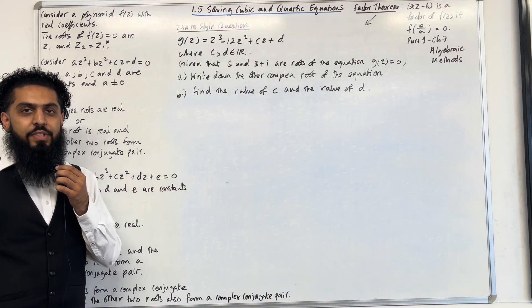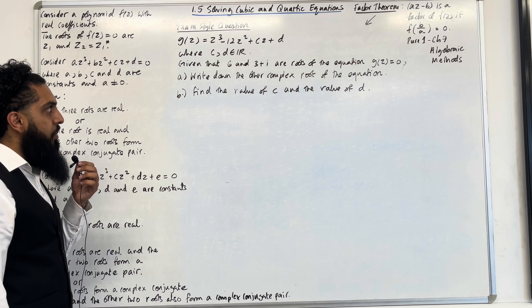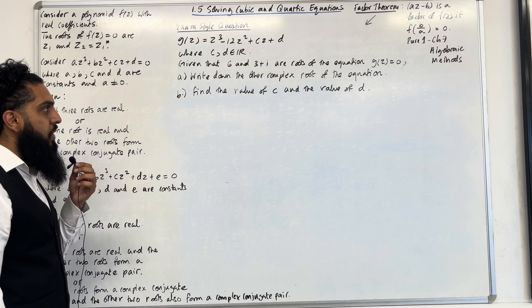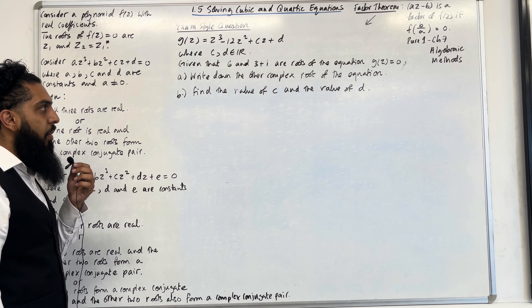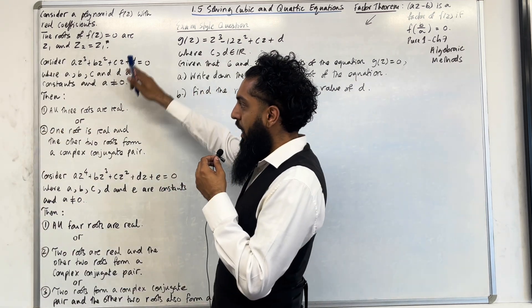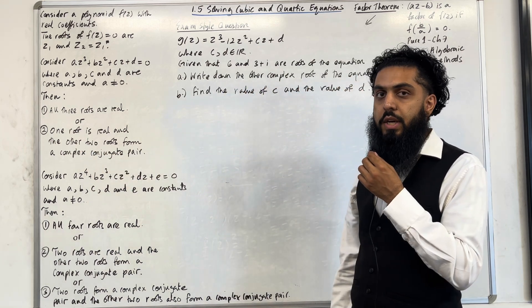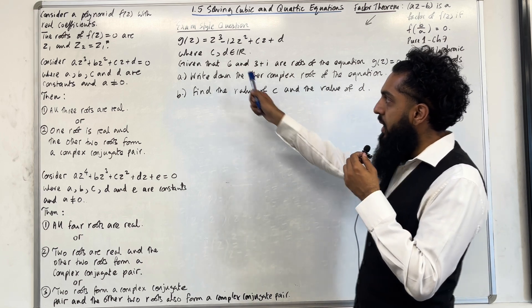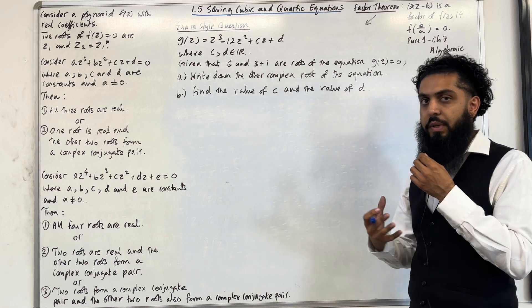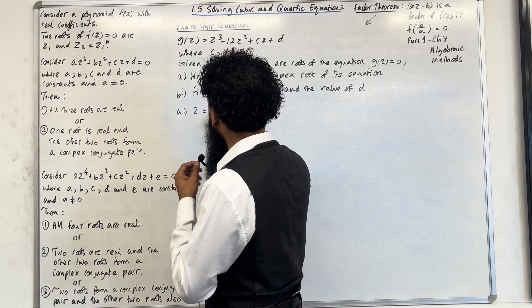Moving on to the final exam style question. g(z) = z³ − 12z² + cz + d, where c and d are real. Given that 6 and 3 + i are roots of g(z) = 0, part A: write down the other complex root. Using key fact scenario 2 for a cubic — one real root and a complex conjugate pair — the third root must be the complex conjugate of 3 + i. So the answer is z = 3 − i.